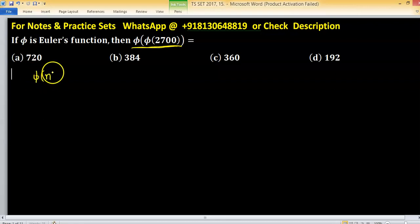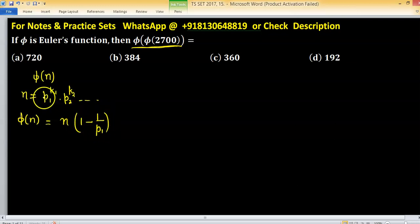Suppose we have to find value of phi n. Make prime factorization of this n means p1 raised to the power k1 into p2 raised to the power k2 and so on. So phi n, value of phi n equals to n into (1 - 1/p1) times (1 - 1/p2), this is second prime, times (1 - 1/p3) using third prime and so on up to whenever you use all primes.